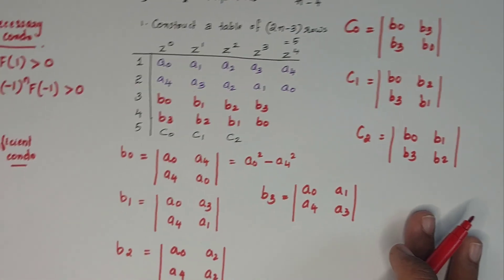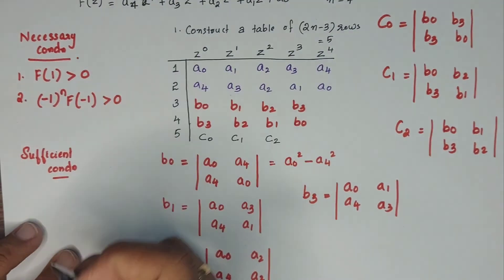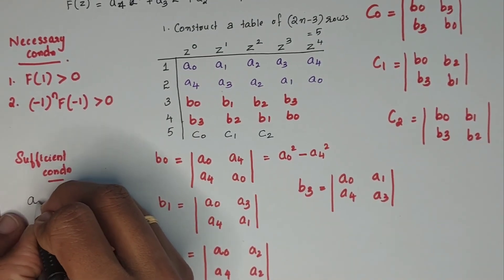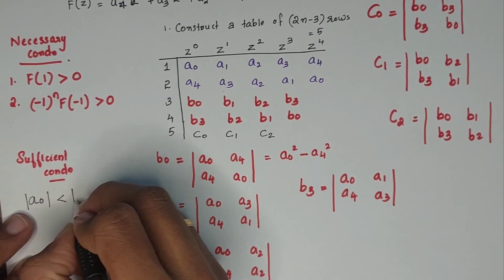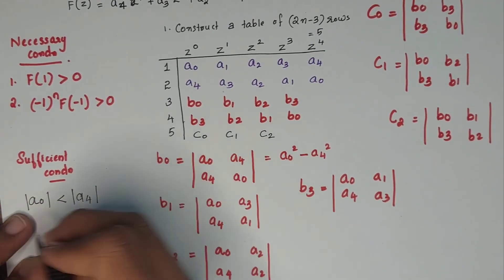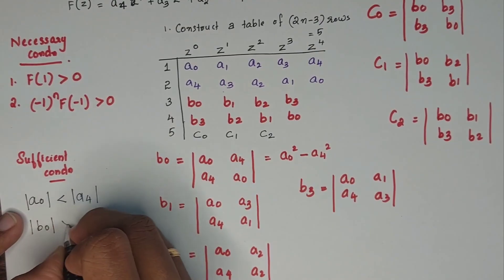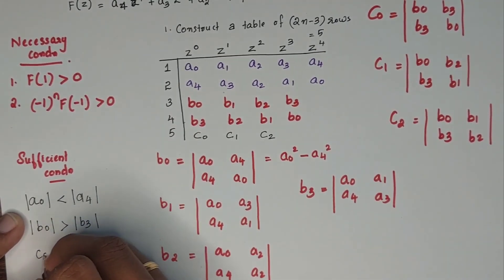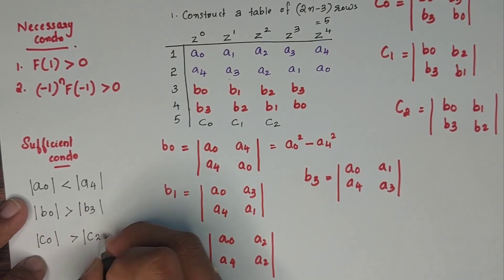Now, what is the sufficient condition? We check the values from the table against these rules: the magnitude of A0 should be less than A4; the magnitude of B0 should be greater than the magnitude of B3; and the magnitude of C0 should be greater than the magnitude of C2.